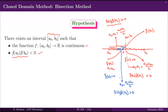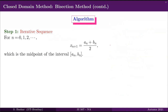The iterative sequence goes as follows. For every n = 0, 1, 2, …, you have x_{n+1} = (aₙ + bₙ)/2, which is the midpoint of the interval aₙ to bₙ. When n = 0, x₁ = (a₀ + b₀)/2, and when n = 1, x₂ = (a₁ + b₁)/2, precisely as explained previously.